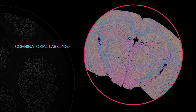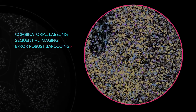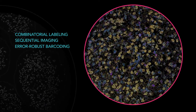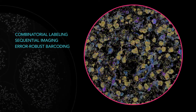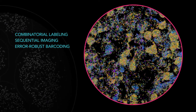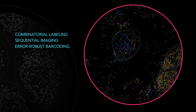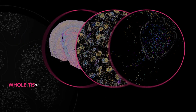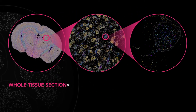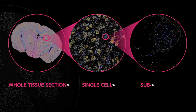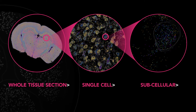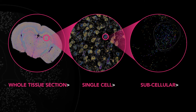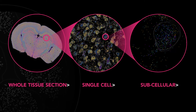Through combinatorial labeling, sequential imaging, and error-robust barcoding, MERFISH technology provides the highest detection efficiency and resolution available for spatially profiling the transcriptome — from whole tissue section to single cell, and finally, subcellular imaging across the whole tissue.